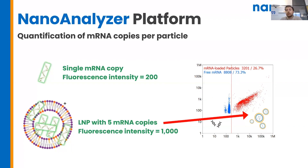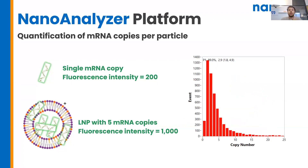I'm going to be showing a little bit of data of how we present this. Mostly we like to present it with histograms demonstrating the spread of the RNA throughout the particle population, and we can also get average data as well.